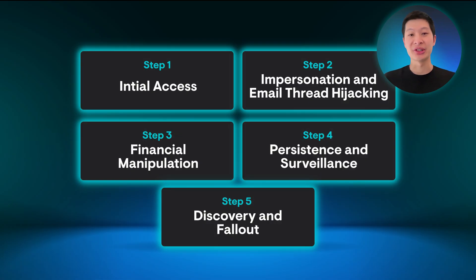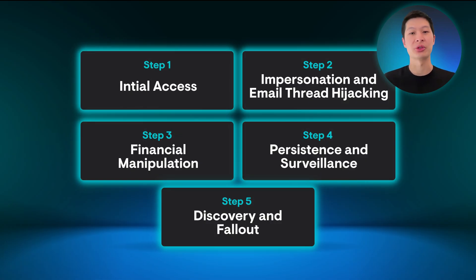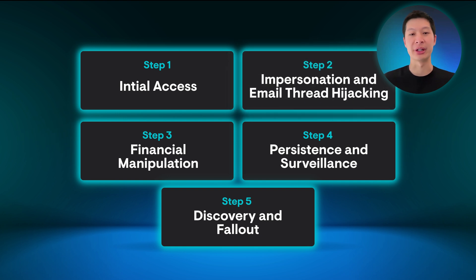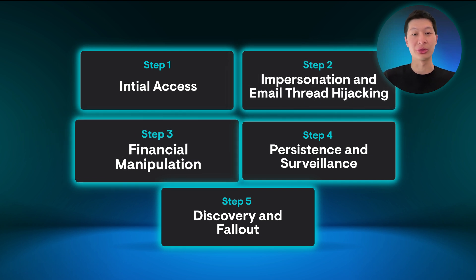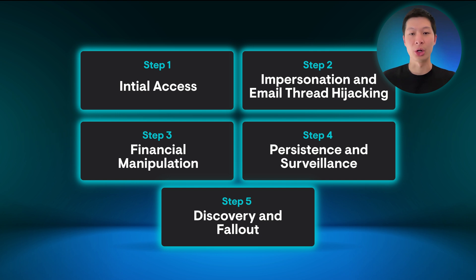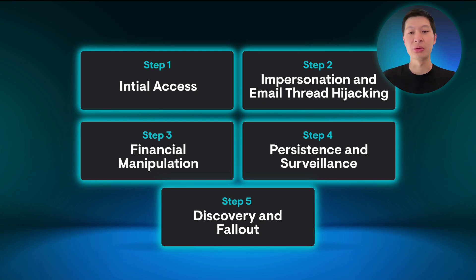To summarize, here are the main stages of a BEC attack. An attacker either spoofs or compromises a trusted business email account and uses it to manipulate financial transactions. The attackers will change payment instructions, hijack email threads and trick employees into sending money to fraudulent accounts. To stay hidden, attackers create mailbox rules or use rogue open authentication apps to monitor communication. Even if fraudulent transactions are detected later, the financial and reputational damage is already done.